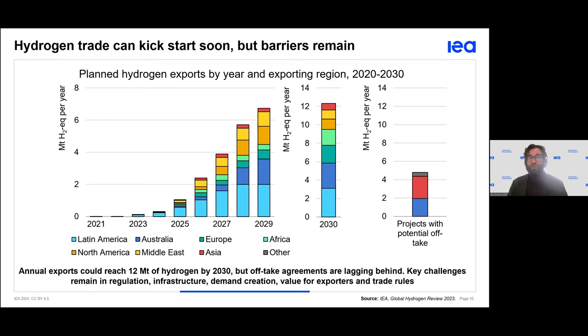Hydrogen can be transported in the form of ammonia, but there is a subsequent conversion challenge. New technologies therefore need to be developed, and more investment is required in this area.